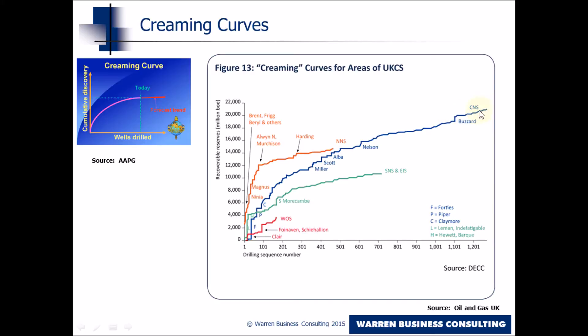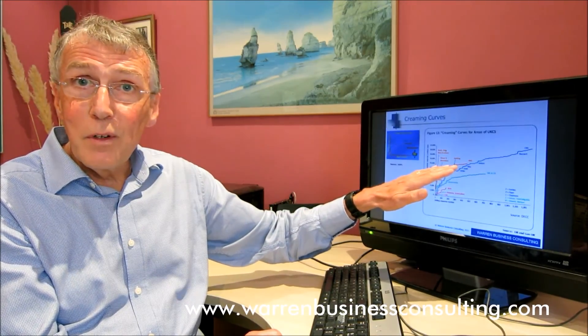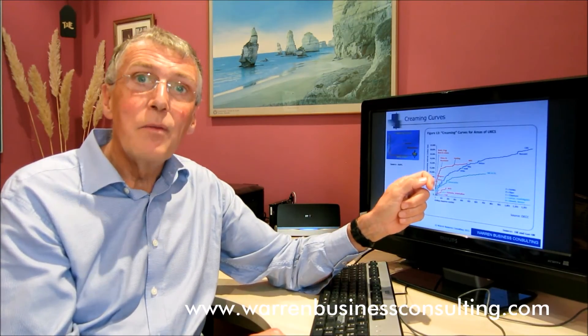The creaming curves tell you a little bit about the story of a basin — how much resource has been added for the number of exploration wells drilled. They force you to ask: are you, perhaps like the Northern North Sea, in a state of maturity where further exploration hasn't paid off? Or are you in an area like the Central North Sea, where new play concepts are being developed and discoveries continue to be made? This is the choice that faces explorationists in any basin in the world — deciding whether the basin has reached its full potential or whether the creaming curve is going to take another step up and enter a new phase of its history.